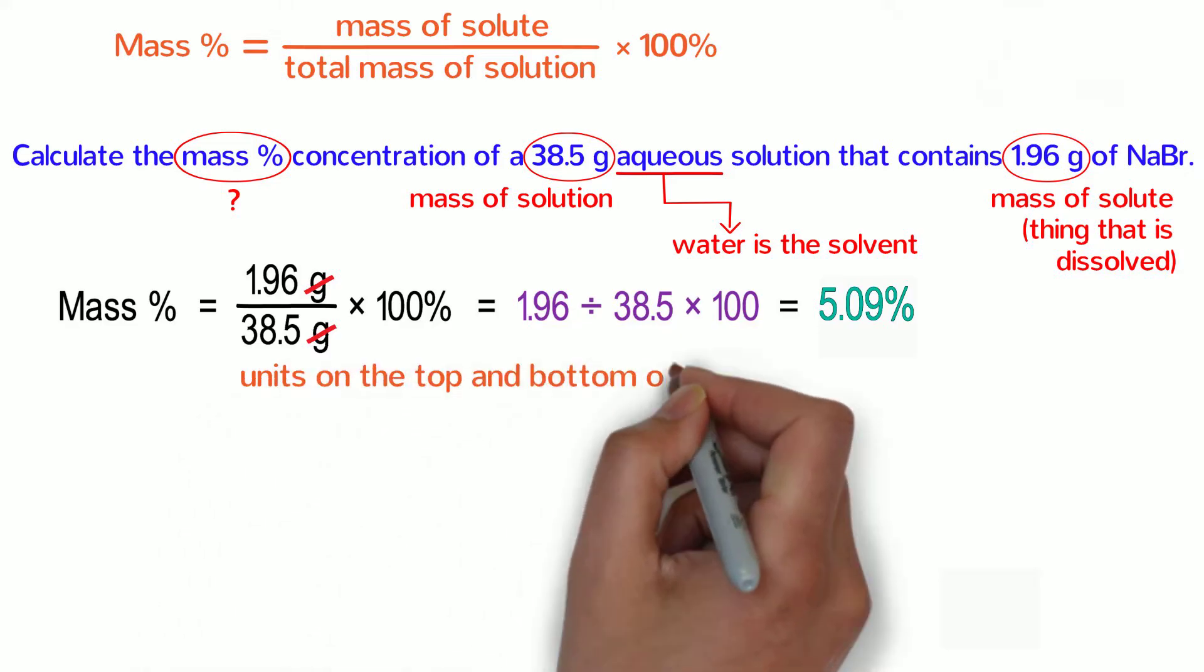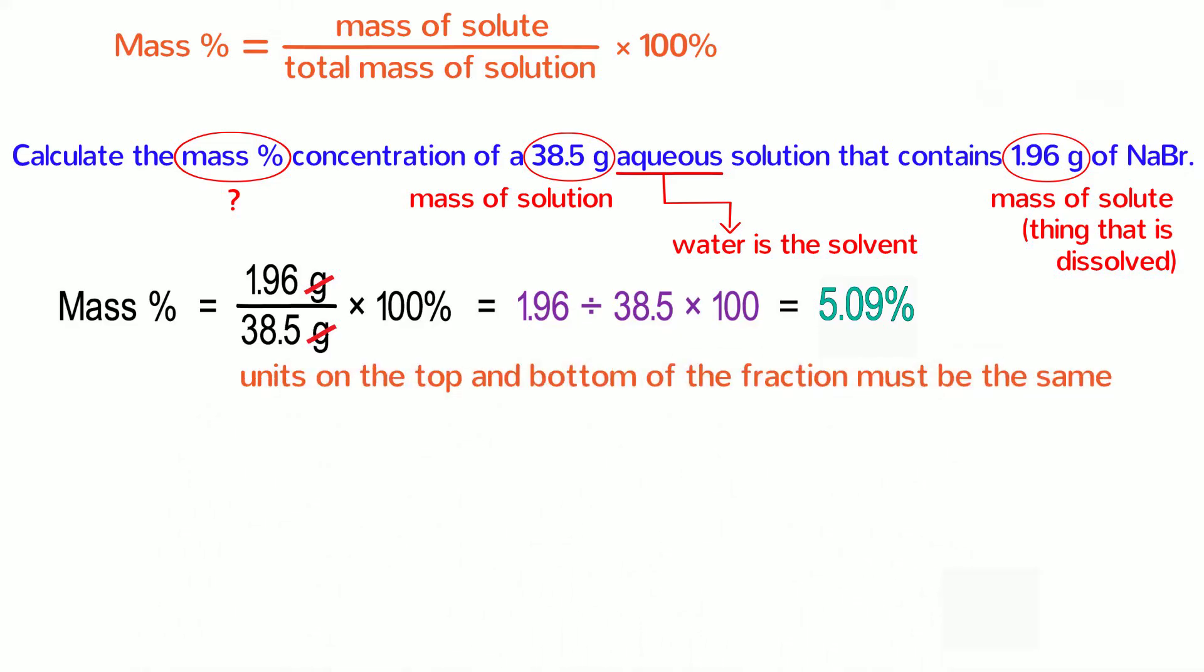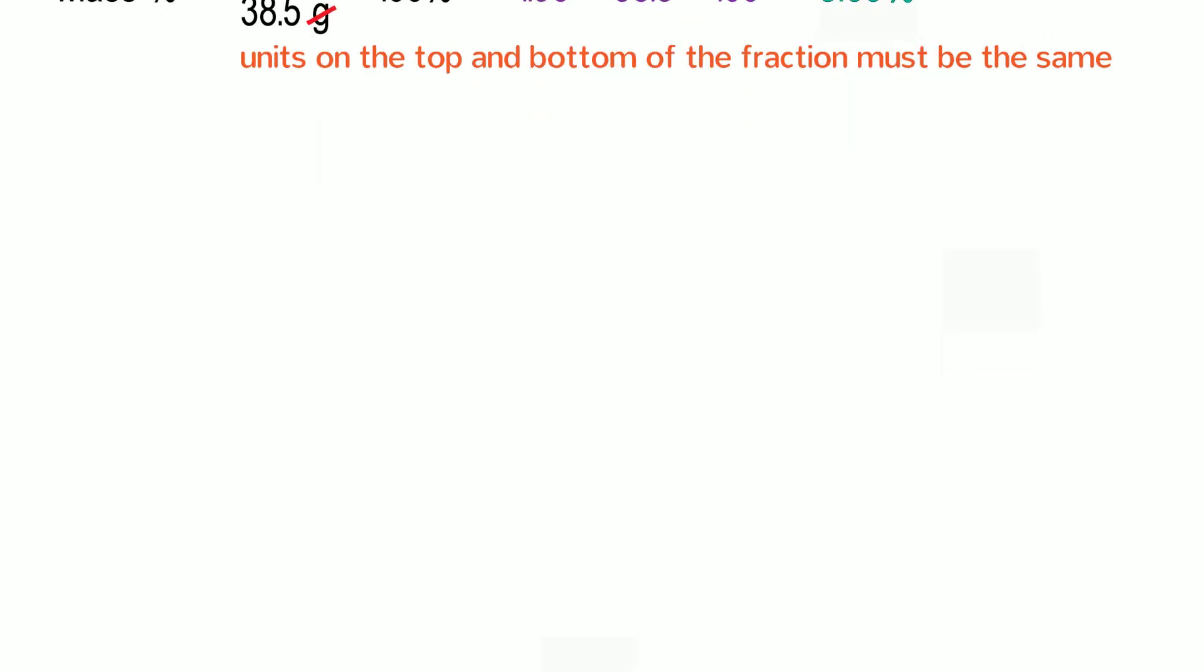This is true for any kind of percent or any kind of parts per calculation. The units on the top and bottom of the fraction must be the same so that they cancel out. Percent functions as the units of our answer, but in reality, percent is merely a way to represent a dimensionless ratio. Okay, let's try another problem.